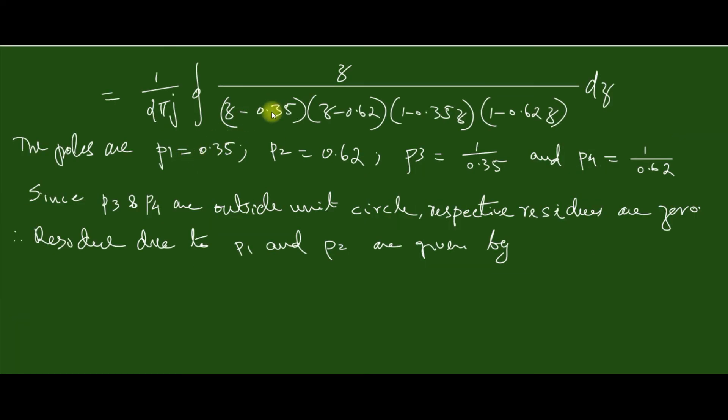The poles are at z equal to 0.35, which is denoted as p1. z is into 0.35, then p2 is 0.62, then p3 equal to 1 by 0.35 and p4 equal to 1 by 0.62.